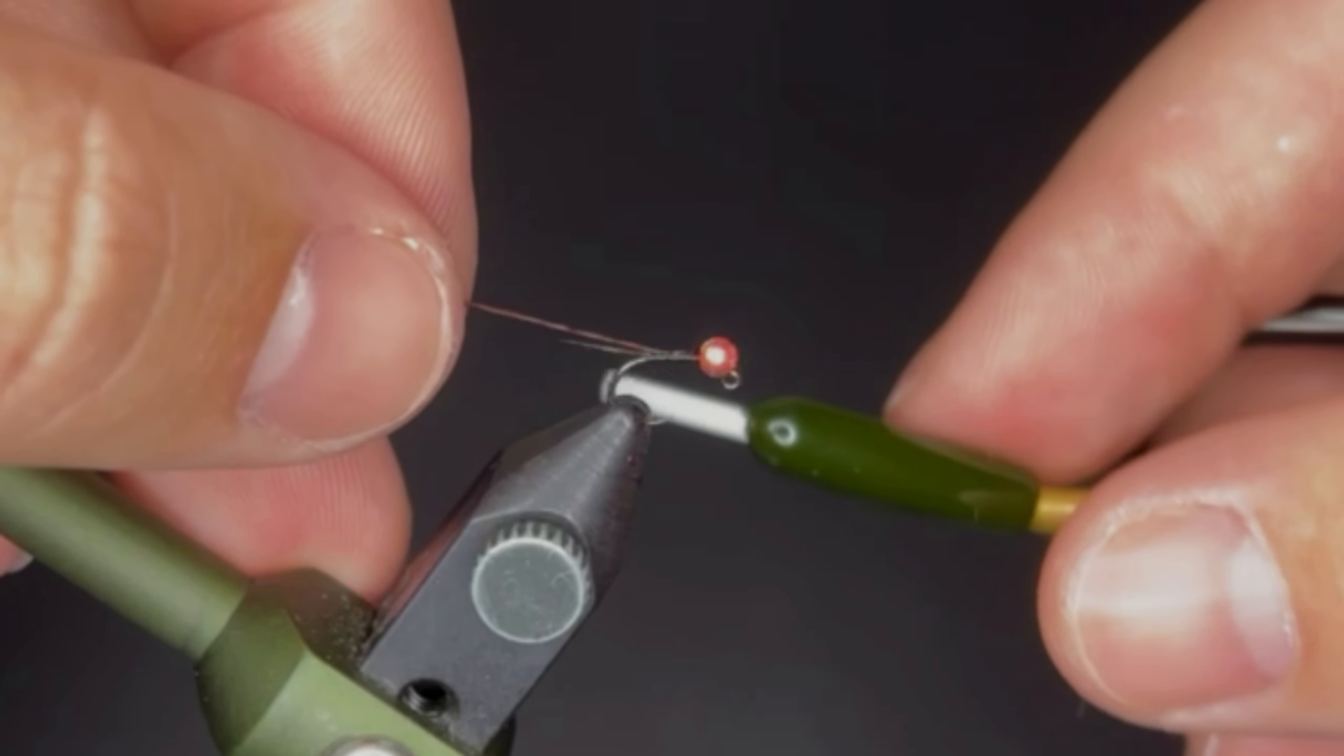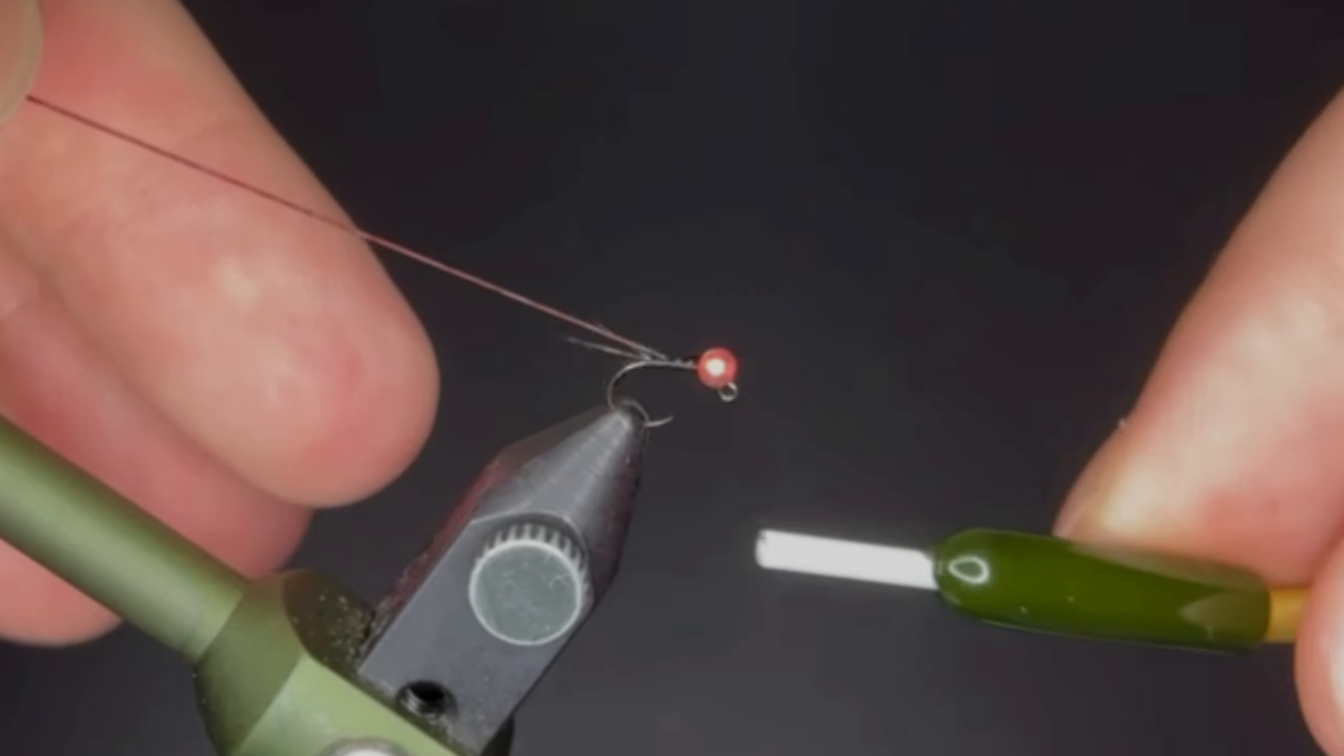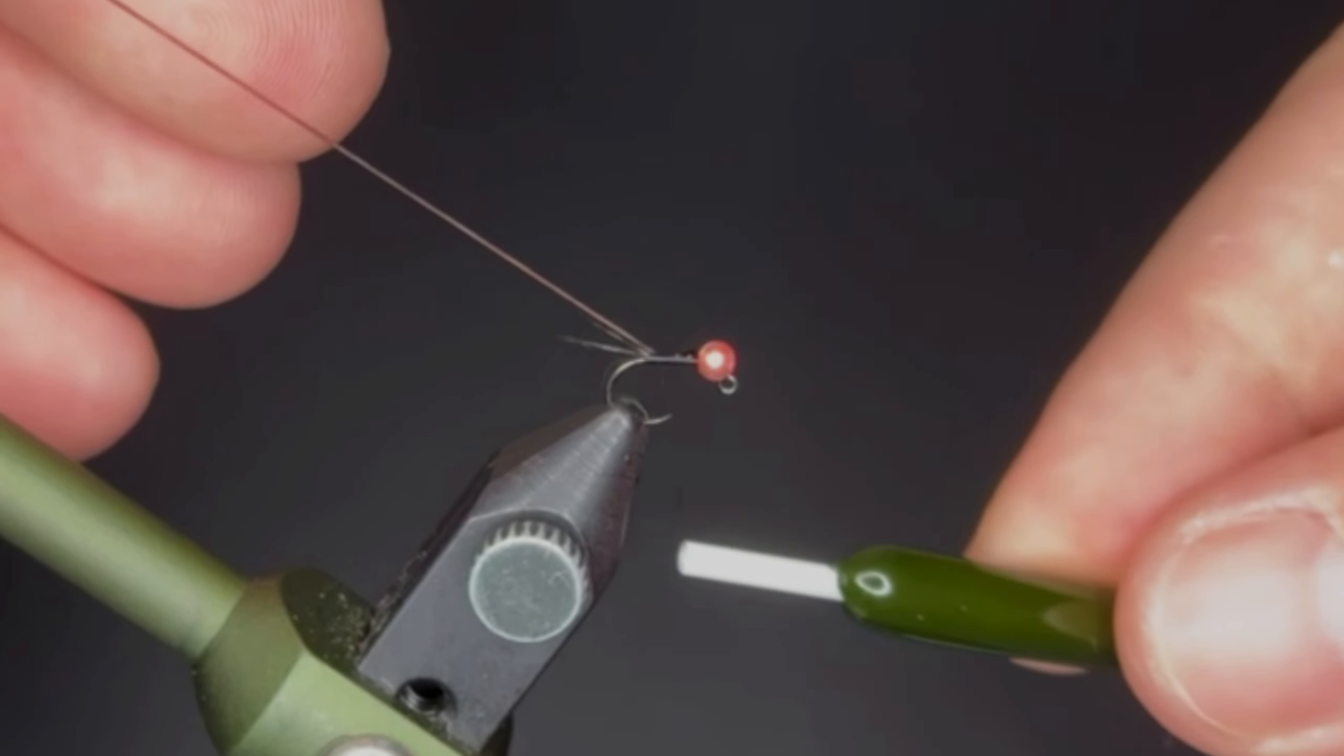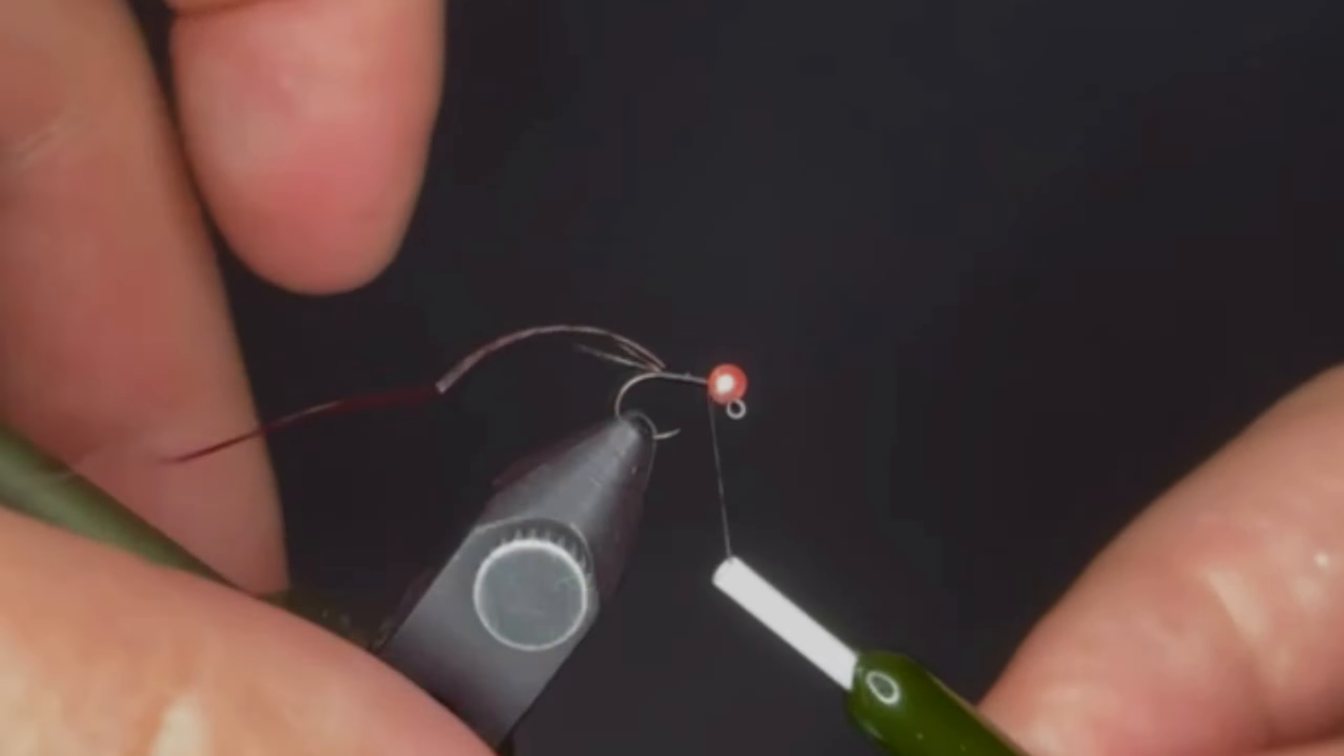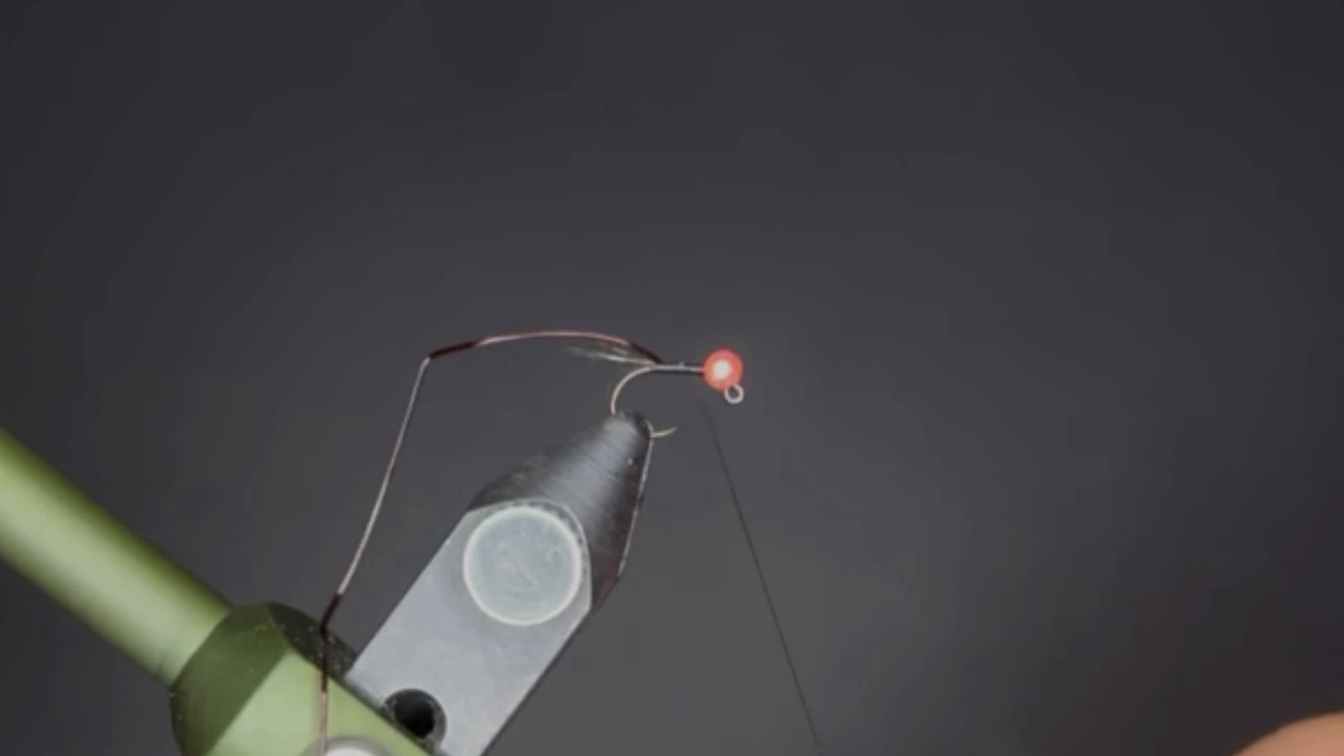Do a couple of loose wraps to be able to pull that tight, lock it down, and bring your thread rearward to right at the base of the tail. Then bring your thread back forward to lock that piece down. I'm going to throw in two half hitches so we can save our work and utilize the rotary function of this vise.